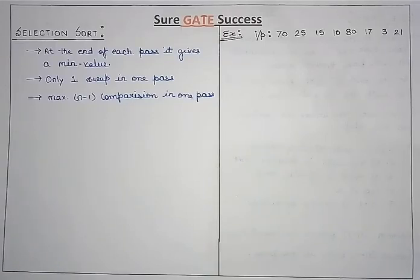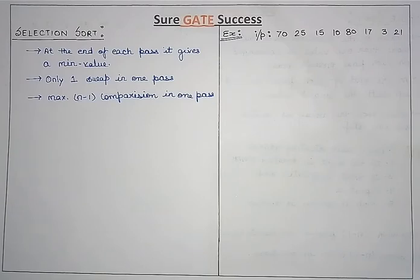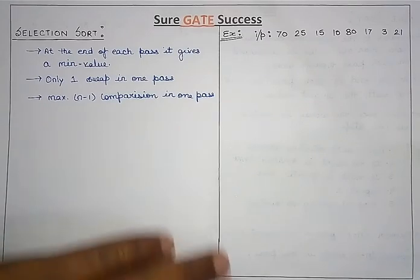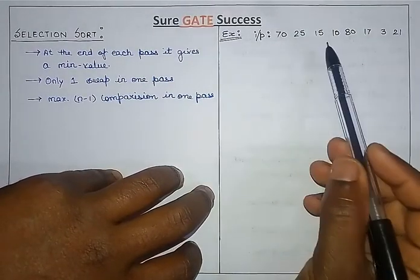Hello guys, welcome to Sure Get Success. This video is on selection sort. As of now, we have completed a few sortings, and these sortings are comparison-based sorting techniques. Selection sort is also one of the comparison-based sorting techniques. In this technique, at the end of each pass there will be a minimum value, and there will be only one swap in a single pass. Maximum there will be n minus 1 comparisons. Let's understand it with the help of an example. We have 8 elements as input.